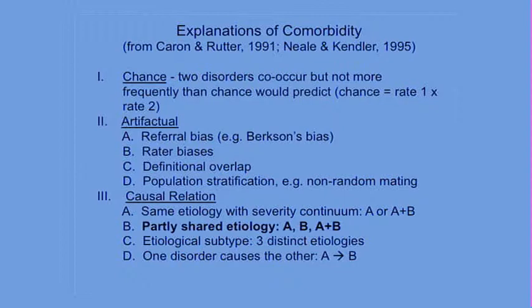As much as we'd like to think so, the disorders in DSM are not a product of natural selection — they're not encoded in the genome. Another causal possibility is three distinct disorders, each with a different etiology: disorder A has its own etiology, disorder B has its own, and the comorbid subtype is distinct from either with a third separate etiology. A final possibility is that one disorder could influence the development of another.